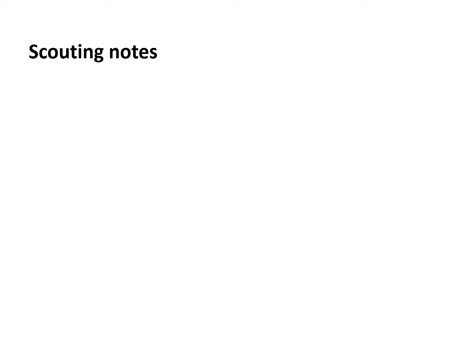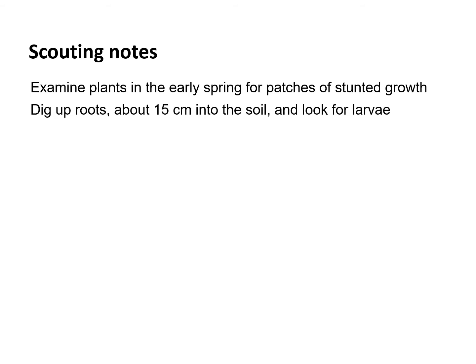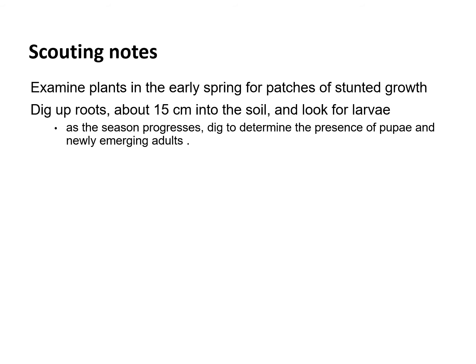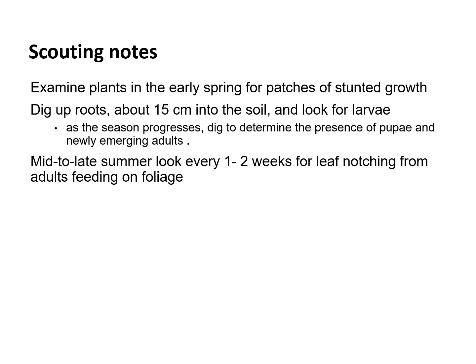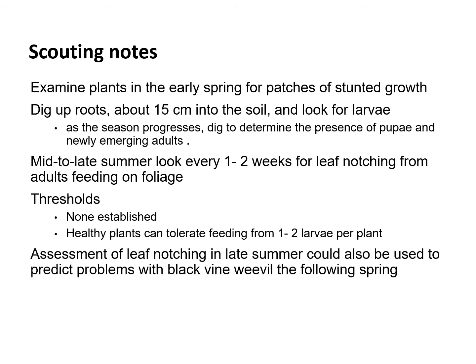To scout for weevils, begin looking in the early spring for patches of stunted growth. Carefully dig up the root and look for larvae or frass. If grubs are found, control measures should be taken after harvest. Later in the summer, look every one to two weeks for leaf notching from adults, which can be used to predict problems the next spring. Adults are active at night and are challenging to find, so you are more likely to find the notched leaves.